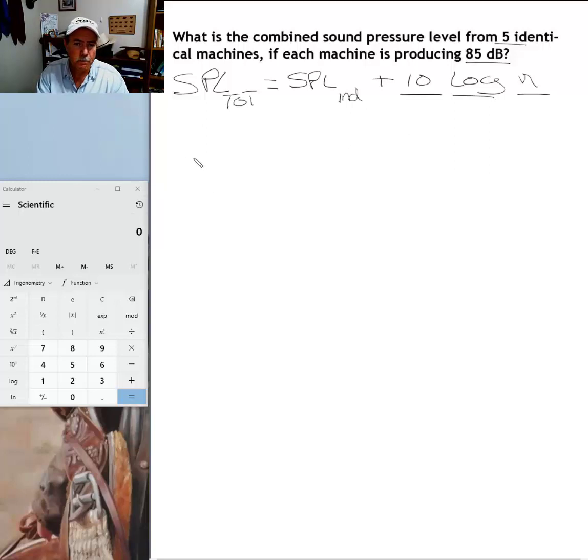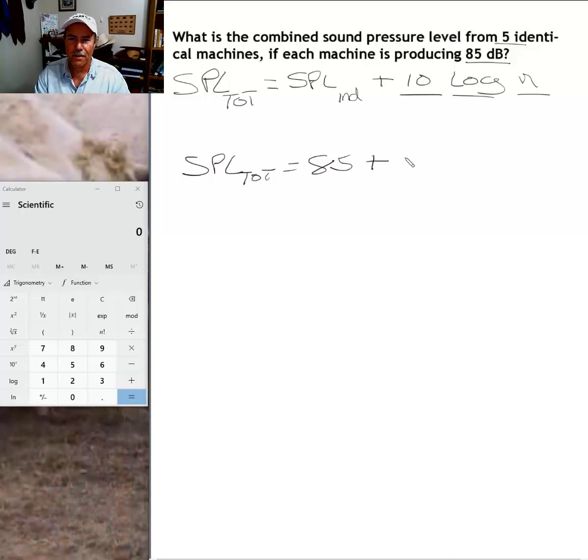Let's go ahead and plug in our numbers and start doing some calculations. For SPL individual, we can plug in 85—and pardon my penmanship, I don't have the nicest writing style. Five is the number of machines, so that's n. The sound pressure of an individual machine is 85, so that's why we have 85 here.